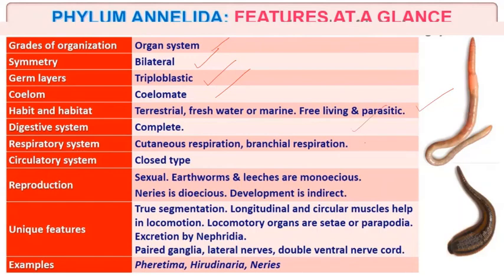Digestive system is complete. Respiration is cutaneous — that is through skin — or branchial, meaning they have gills for respiration. Circulatory system is closed. Reproduction is sexual only. Earthworm and leeches are monoecious and Nereis is dioecious. Development is indirect. True segmentation present. Longitudinal and circular muscles are present. Locomotory organs are setae or parapodia. Examples are Nereis, Pheretima, and Hirudinaria.